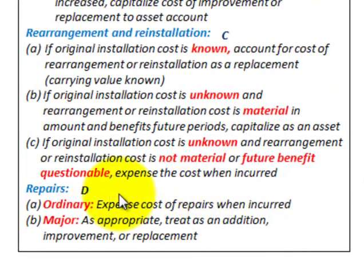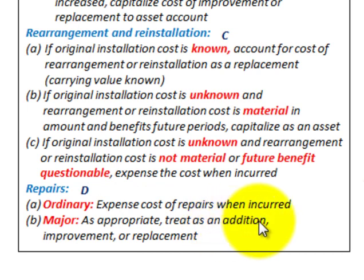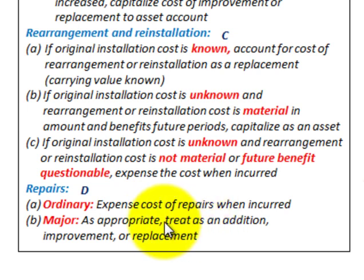For the accounting treatment of repairs: (A) for an ordinary repair, expense the cost to repairs when incurred, since it just maintains the plant's assets in operating condition. (B) For major repairs, treat them as appropriate — as an addition, improvement, or replacement — since they benefit several years into the future, and apply those corresponding rules.